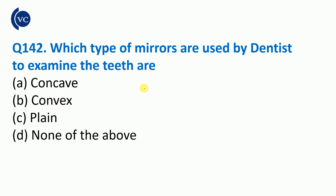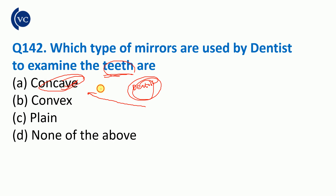Next question: which type of mirror is used by the dentist to examine teeth? To examine teeth, the dentist uses a concave mirror. The right answer is concave mirror. It can produce a real and magnified image, which is why it is used.